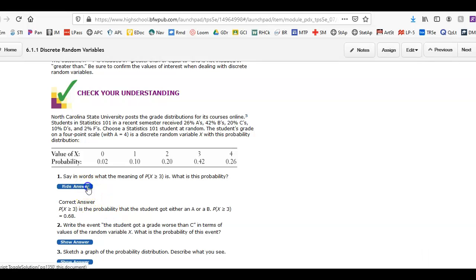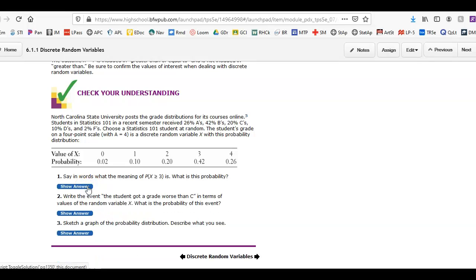Alright, part 2. Write the event probability got worse than a C. Worse than a C, well, this is A, B, C. So it would be the probability that X is less than 2, or you could write it as X is less than or equal to 1. And the probability would be 0.12.